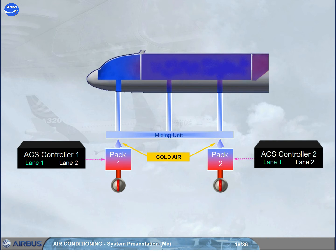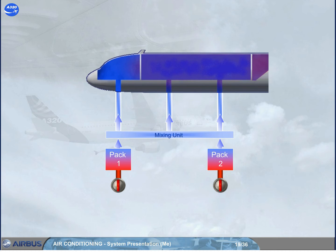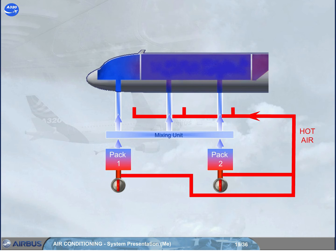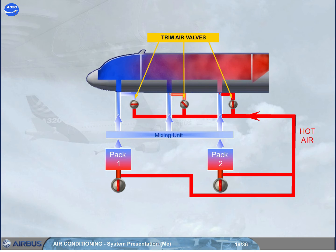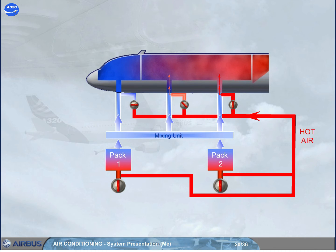Normally, cold air is delivered by the packs and is then sent to the three zones. Since the different areas of the aircraft may require different amounts of cooling or heating, hot bleed air can be added via trim air valves to obtain the demanded temperature for a zone. In the example shown, no hot air is being added to the cockpit zone, some hot air is being added to the forward cabin zone, and a lot of hot air is being added to the aft cabin zone.